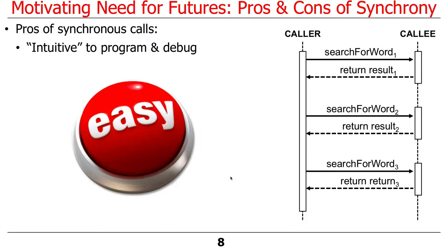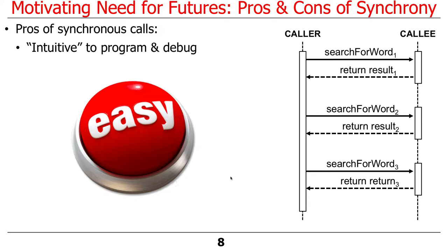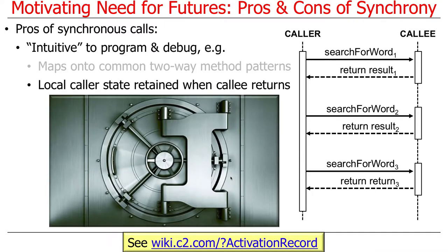The good news is we've all done it forever, so it's really intuitive. It doesn't take a lot of deep thinking to get right, because that's the way we've learned how to program. It maps nicely onto conventional, common two-way method call patterns of request-response. Local caller state is retained in the activation record of the caller so that when the callee returns, the state is immediately available.